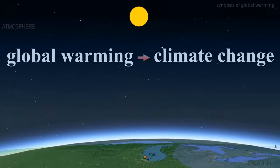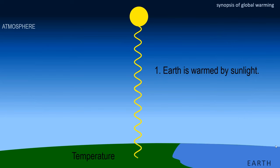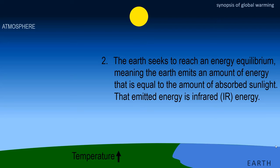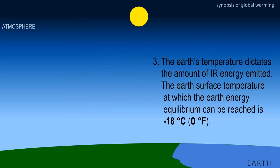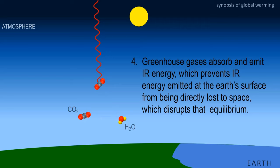Now for the next two minutes, I'm going to summarize the entire technical story. First, the Earth is warmed by sunlight. Second, the Earth seeks to reach an energy equilibrium, meaning it emits an amount of energy equal to the amount of absorbed sunlight — that emitted energy is infrared. Third, it is the temperature that dictates the amount of infrared energy emitted, and the surface temperature at which Earth's energy equilibrium can be reached is negative 18 degrees Celsius, or zero Fahrenheit. Fourth, greenhouse gases absorb and emit infrared energy, which prevents the infrared emitted at Earth's surface from being directly lost to space, disrupting that equilibrium.